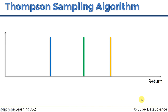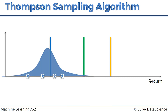At the start, just like with the upper confidence bound algorithm, you don't know anything and all machines are identical to you. You need at least a couple of trial rounds to get some data. After some trial runs for the blue machine, the Thompson Sampling algorithm — and this is where it starts getting different from upper confidence bound — will construct a distribution. Let's do the same for the green machine.